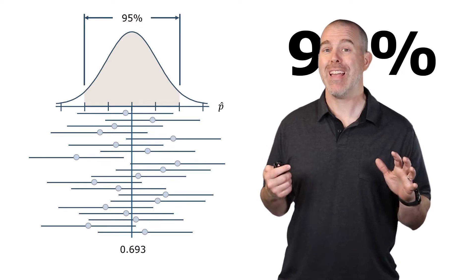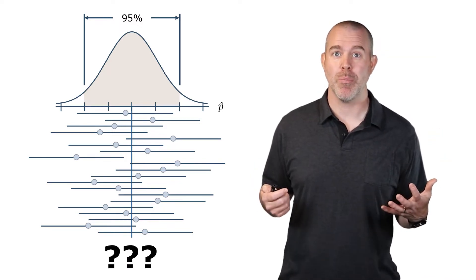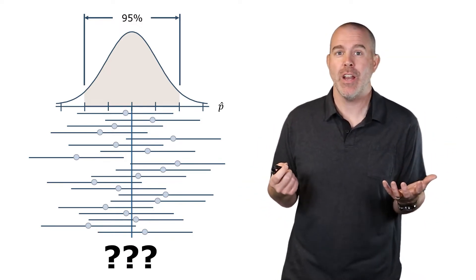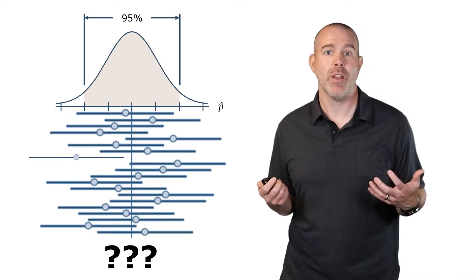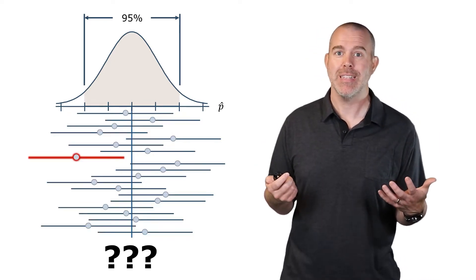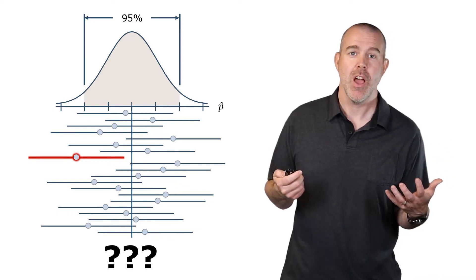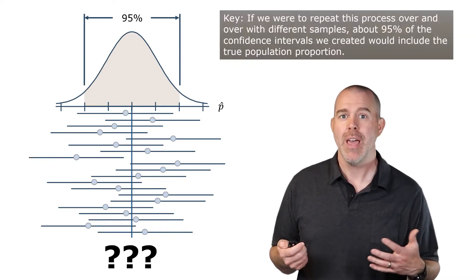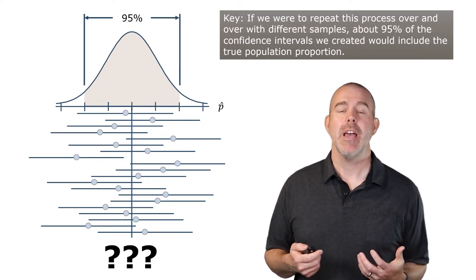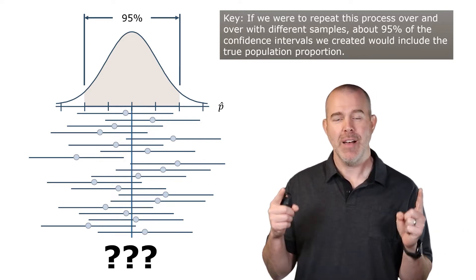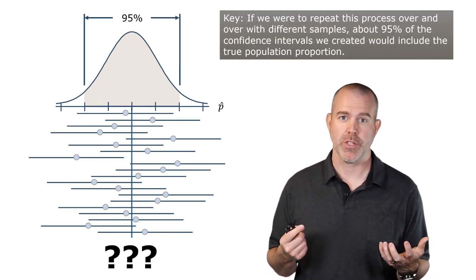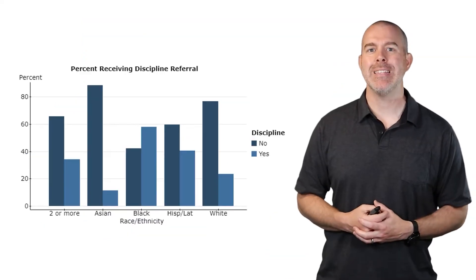In practice, you're not going to know the true proportion — it's just a big question mark. You won't know whether you have one of the 95% of intervals that contain it, or one of the 5% that don't. All you know is that if you keep doing this over and over, 95% of your confidence intervals will contain the true proportion. Let's look at an example — our school discipline data.